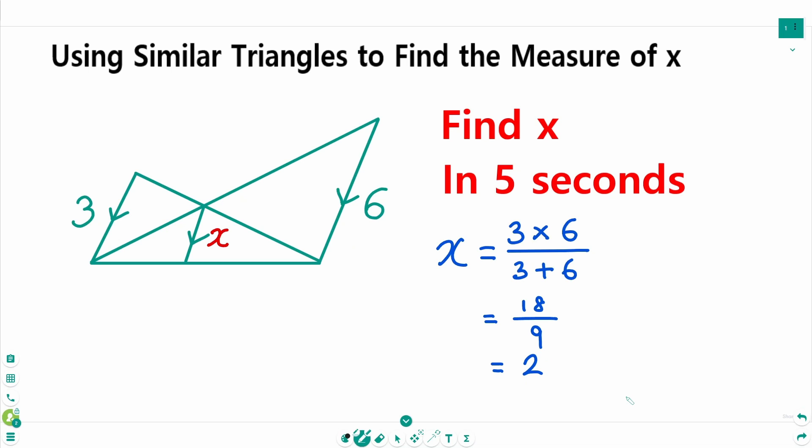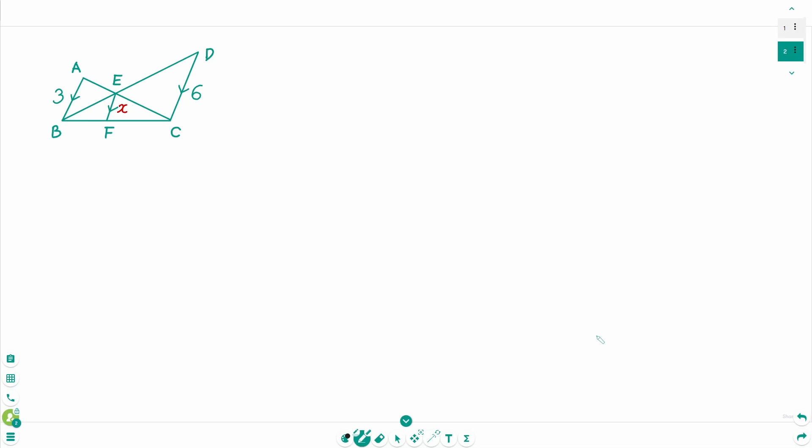Now let's check if this answer is correct. I have labeled the vertices to make it easier to understand. In these two triangles AB and DC are parallel.